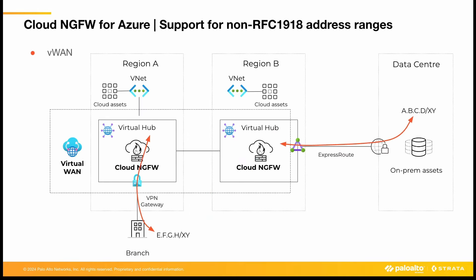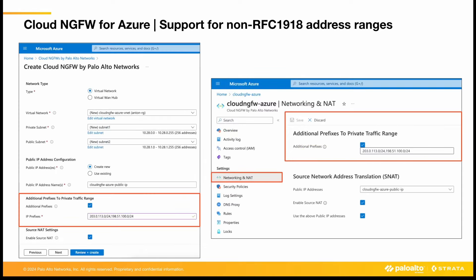In the virtual WAN deployment, customer-owned public prefixes can be advertised to the virtual hub that would direct the traffic back to on-prem networks. In such a scenario, Cloud NGFW also needs to identify the destination prefix and consider this traffic as a private-to-private zone flow.